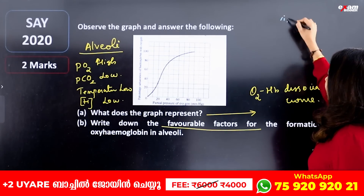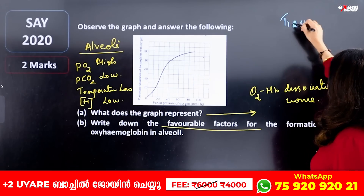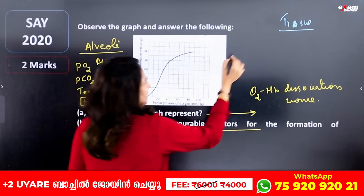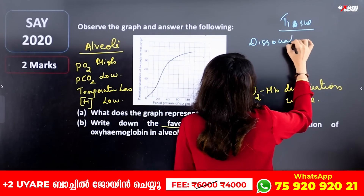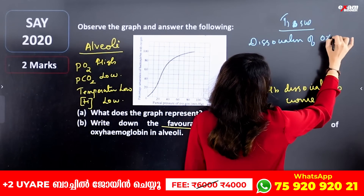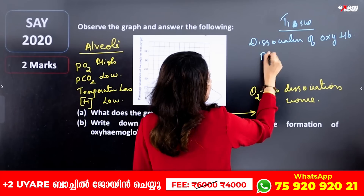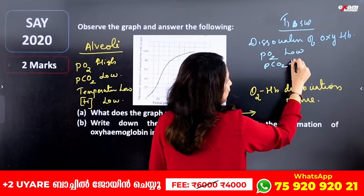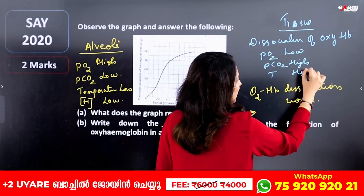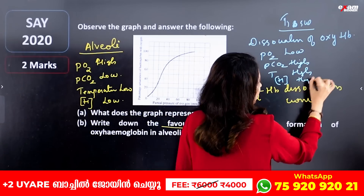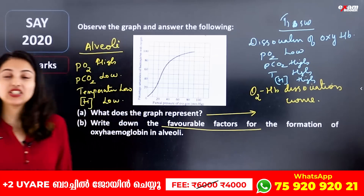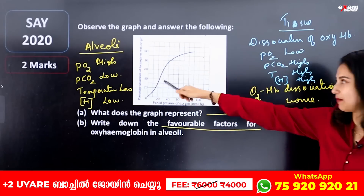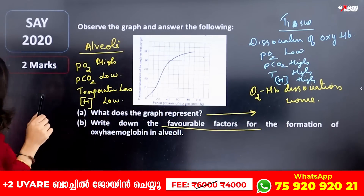In the tissues, the conditions favor Oxygen Hemoglobin Dissociation. The factors are: Partial Pressure of Oxygen is Low, Partial Pressure of Carbon Dioxide is High, Temperature is High, and concentration of H+ ions is High. These are the factors that favor dissociation of Oxygen Hemoglobin in the tissues. Notice the difference between these two sets of factors.